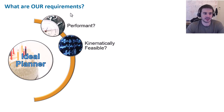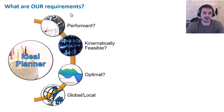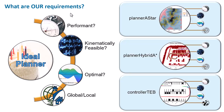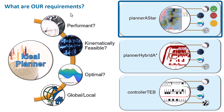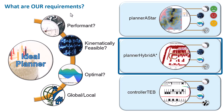We might want it to be performant, to take into account vehicle kinematics, and to be optimal — or maybe it doesn't need to be. We might also consider whether this planner should operate globally or locally. Let's look at three separate planners. Planner A* is very fast — it's a graph-based planner looking through a predefined set of edges, so it's quick and lightweight. It doesn't take into account vehicle kinematics and is optimal within the graph you feed it, but not in the sense of an MPC planner or an optimization problem. Planner Hybrid A* falls into search-based planning, using pre-canned motion primitives to explore space.